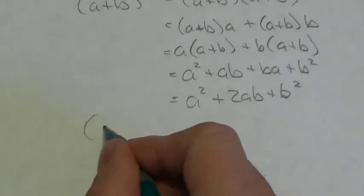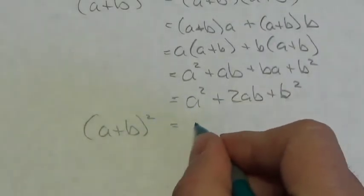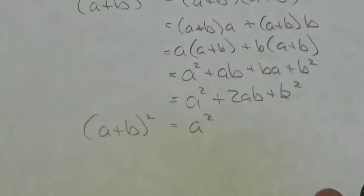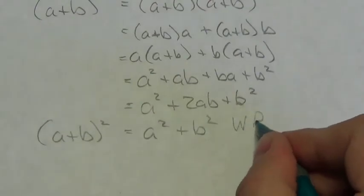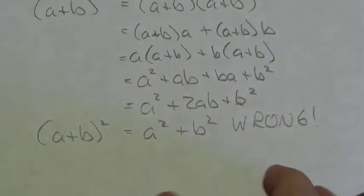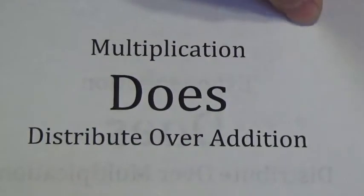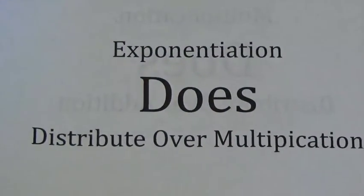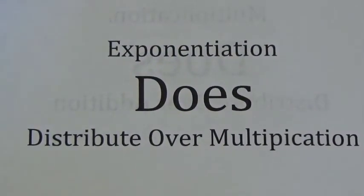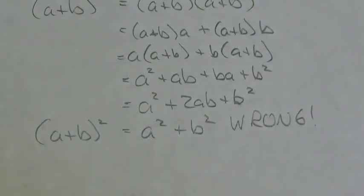So when you do this in your homework, when you do this on an exam, when you say that A plus B squared is equal to A squared plus B squared — that is wrong. You are mistaking the rule. You're actually trying to piece together the two previous rules we looked at: where multiplication does distribute over addition, and where exponentiation does distribute over multiplication — and you're trying to distribute that exponentiation over addition, and it doesn't work like that.